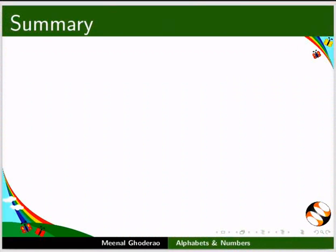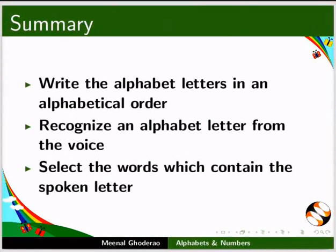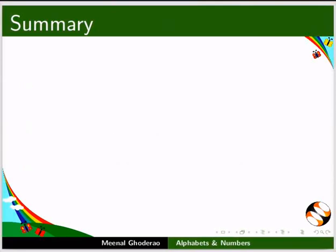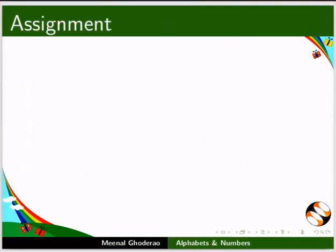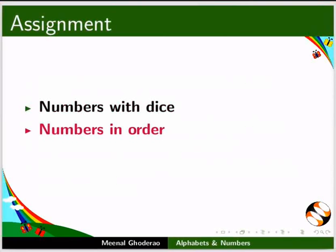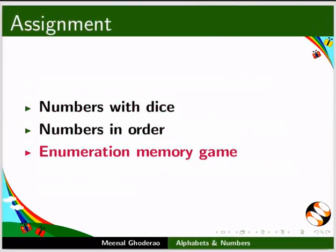Let us summarize. In this tutorial, we have learnt to write the alphabet letters in an alphabetical order, recognize an alphabet letter from the voice, and select the words which contain the spoken letter. We have also learnt to write the numbers, count the numbers, and identify numbers with their corresponding spellings. As an assignment, explore the following activities: Numbers with Dice, Numbers in Order, and Enumeration Memory Game.